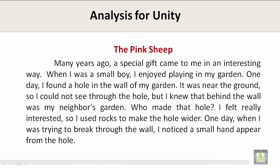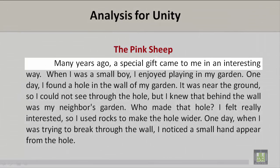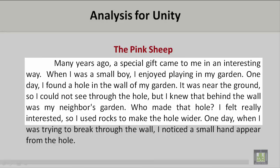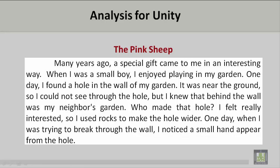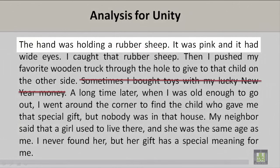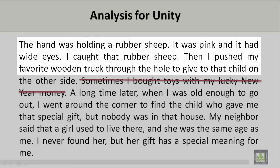The Pink Sheep. Let's take a look at this paragraph. Many years ago, a special gift came to me in an interesting way. When I was a small boy, I enjoyed playing in my garden. One day, I found a hole in the wall of my garden. It was near the ground, so I could not see through the hole, but I knew that behind the wall was my neighbor's garden. Who made that hole? I felt really interested. So I used rocks to make the hole wider. One day, when I was trying to break through the wall, I noticed a small hand appear from the hole. The hand was holding a rubber sheep. It was pink, and it had wide eyes. I caught that rubber sheep. Then I pushed my favorite wooden truck through the hole to give to that child on the other side.